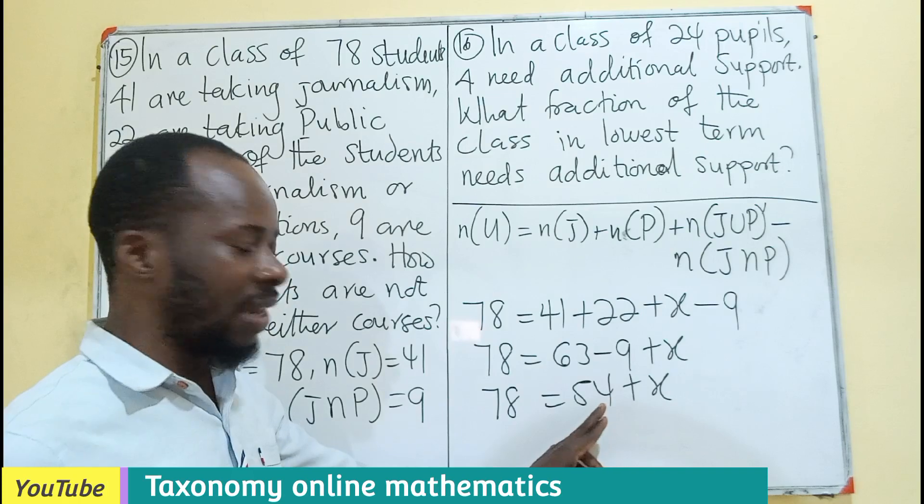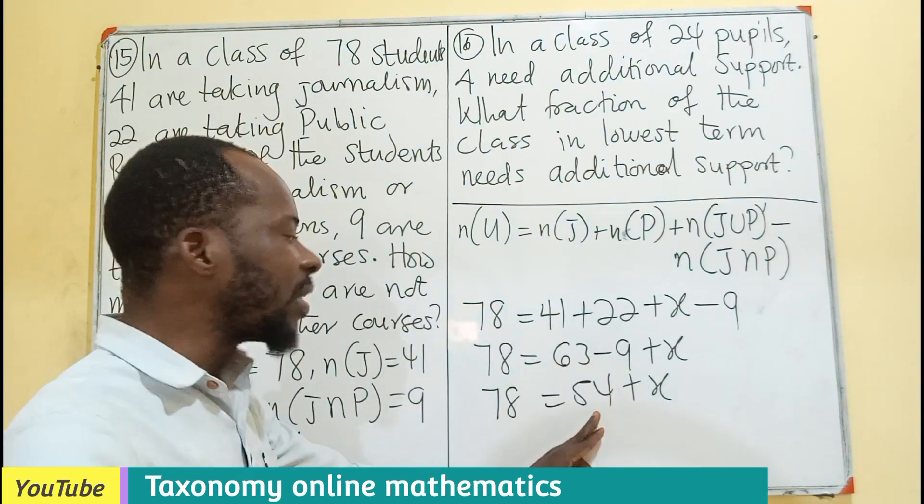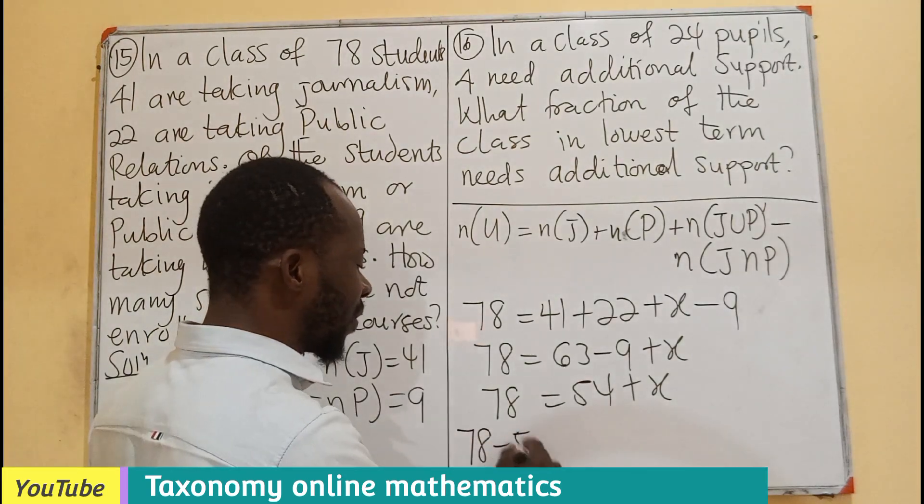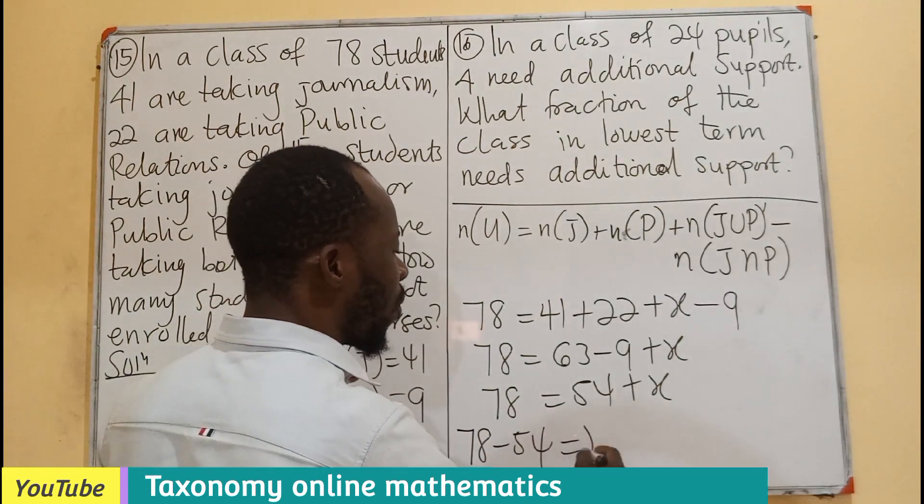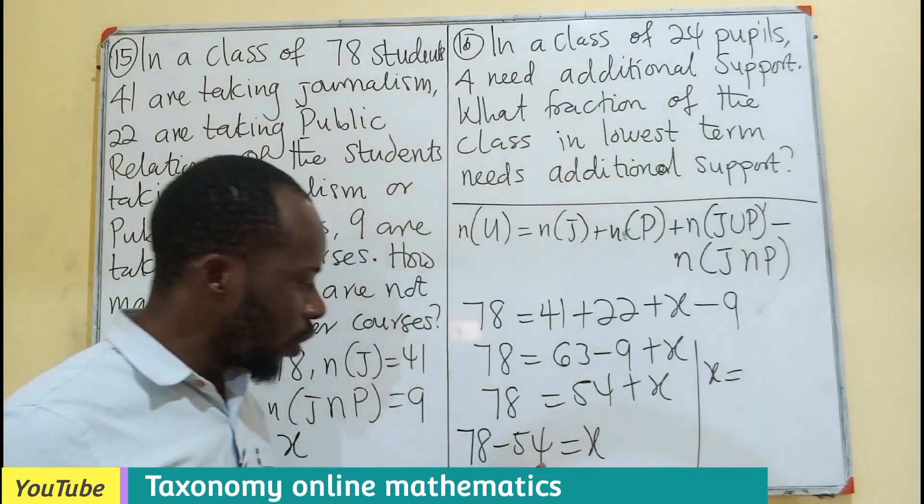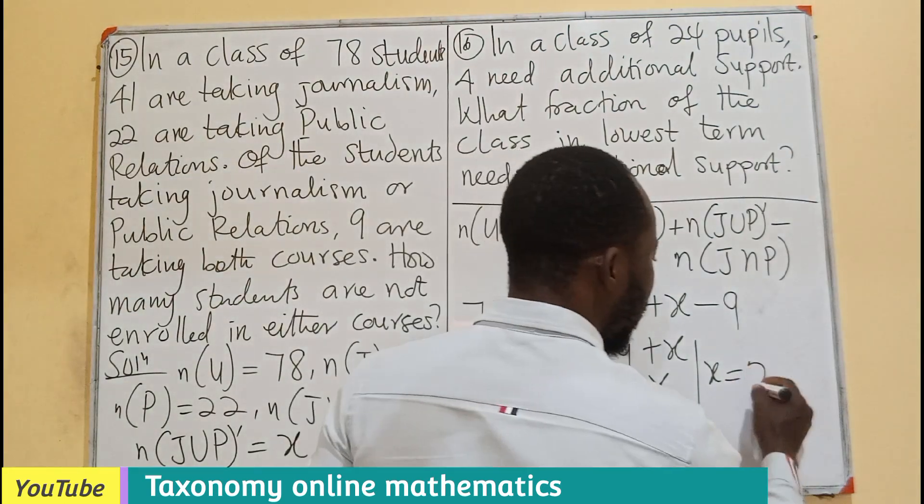We are taking 9 from here. If we take away 3, we are left with 4, 6. 6 from 60 gives us 54. So we have 78 equals to 54 plus X. We are looking for the X. Let's transpose 54 by subtracting 54 from both sides. Therefore, we have 24.